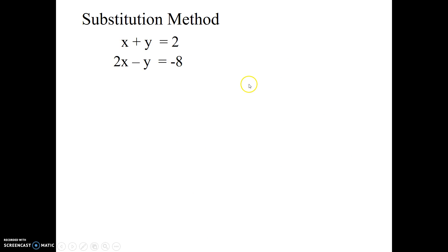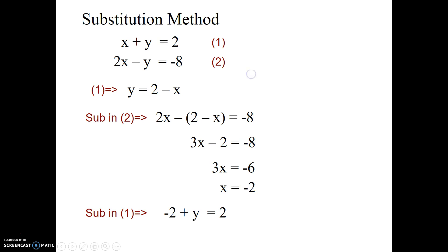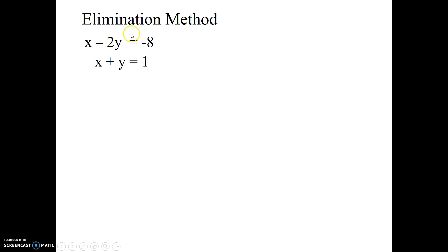I'll quickly click through one more substitution example. Two equations — rearrange equation one, substitute into equation two, simplify, solve for x. Take that x and substitute it back into equation one to get y equals 4. Those are the solutions. Quick check: negative two plus four equals two, and two times negative two minus four equals negative eight — correct. That's the substitution method.